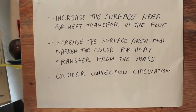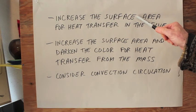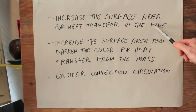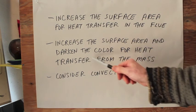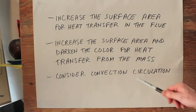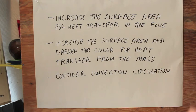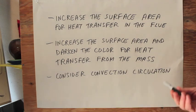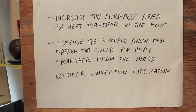Okay, just a quick recap here for considerations for earthen home designs: increase the surface area for heat transfer in the flue; increase the surface area and darken the color for heat transfer from the mass into the living space; and consider the convection circulation and the things that might impede it, like the placement of furniture and partition walls and that sort of thing. Be sure to check out my video on improvements to rocket stove designs, because the two kind of go together: the mass heater and the rocket stove. All right, thanks for watching.